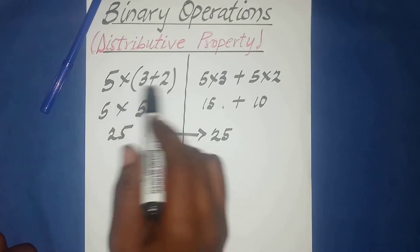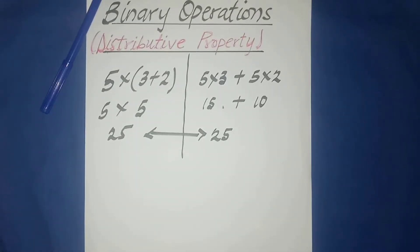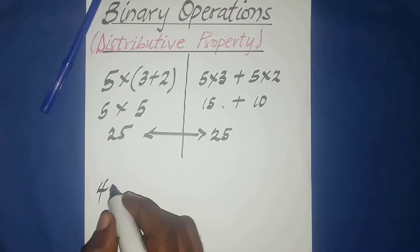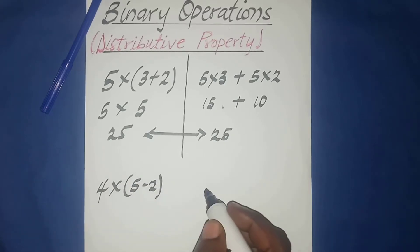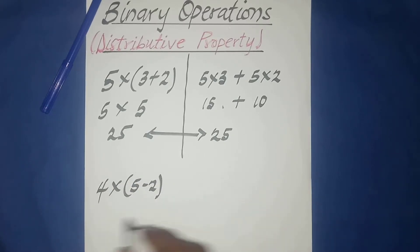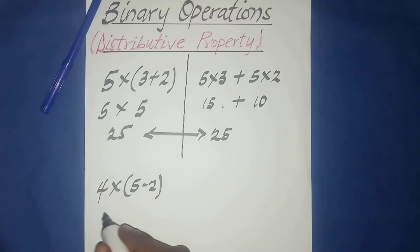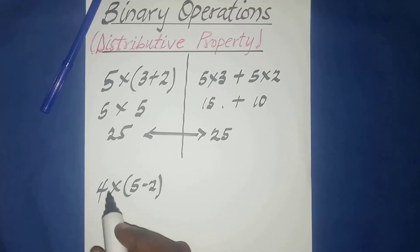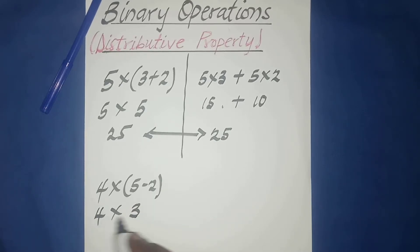The two results are equivalent. The distributive property is a way of rewriting the basic order of operations in a different form. We can also have four times five minus two. Using the order of operations, we multiply the four by the group: four times five minus two equals four times three, which is twelve.